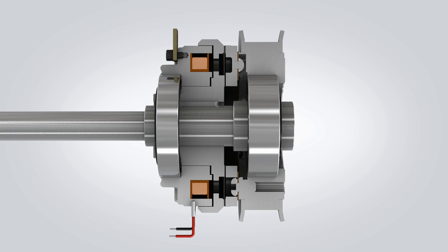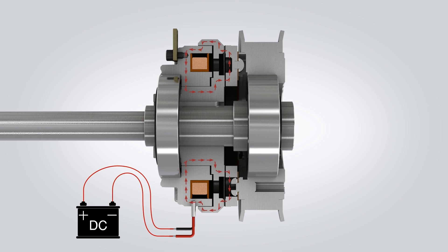With the primary shaft stopped, the clutch can be engaged by supplying the electromagnet coil with the nominal DC voltage. This creates a magnetic field that passes through the clutch rotor and armature.